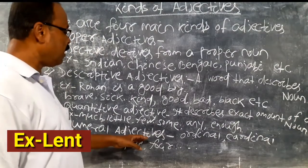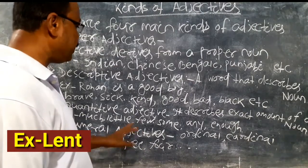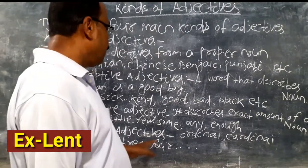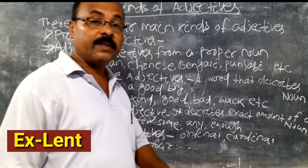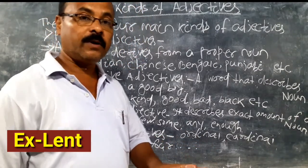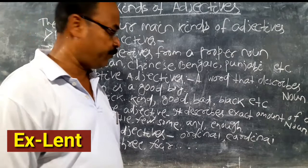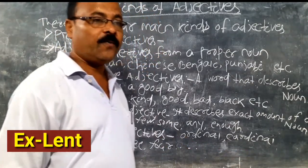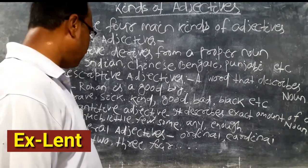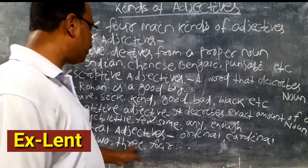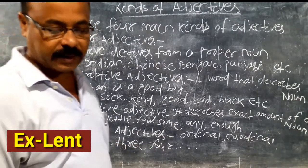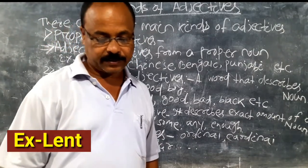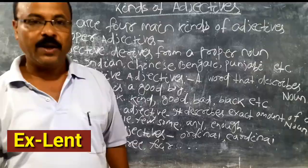Number four: numeral adjectives. Numeral adjectives include words like one, many. There are two types of numeral adjectives: ordinal and cardinal. First, second, third are ordinal. One, two, three, four are cardinal. These are the examples of numeral adjectives.